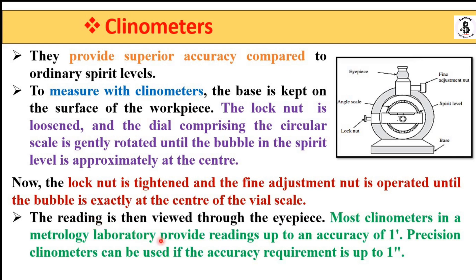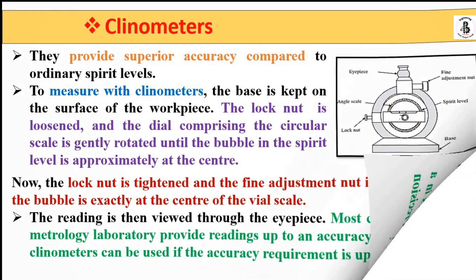The reading is then viewed through the eyepiece. Most clinometers in metrology laboratories provide readings up to an accuracy of one arc minute, and precision clinometers can be used if accuracy is required up to one arc minute.